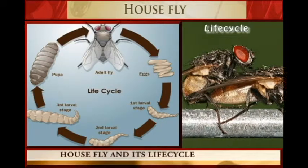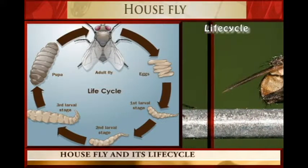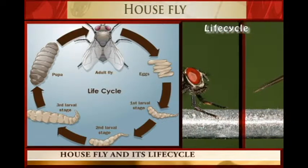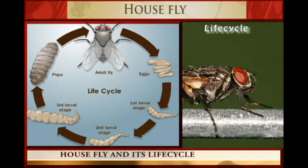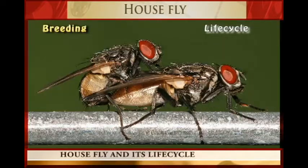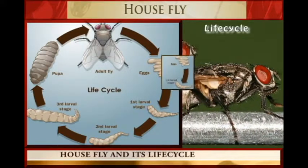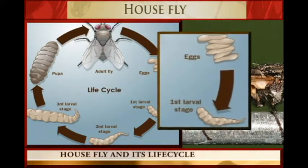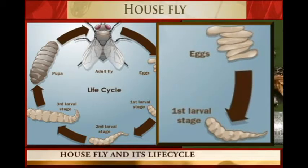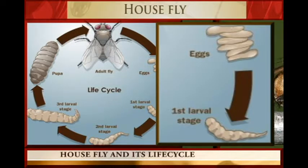Now we want to look at the life cycle of the house fly — how it goes through its life processes from generation to generation. The breeding takes place on decomposing materials, and after 15 to 24 hours the eggs will hatch into the larva, which is the maggot.